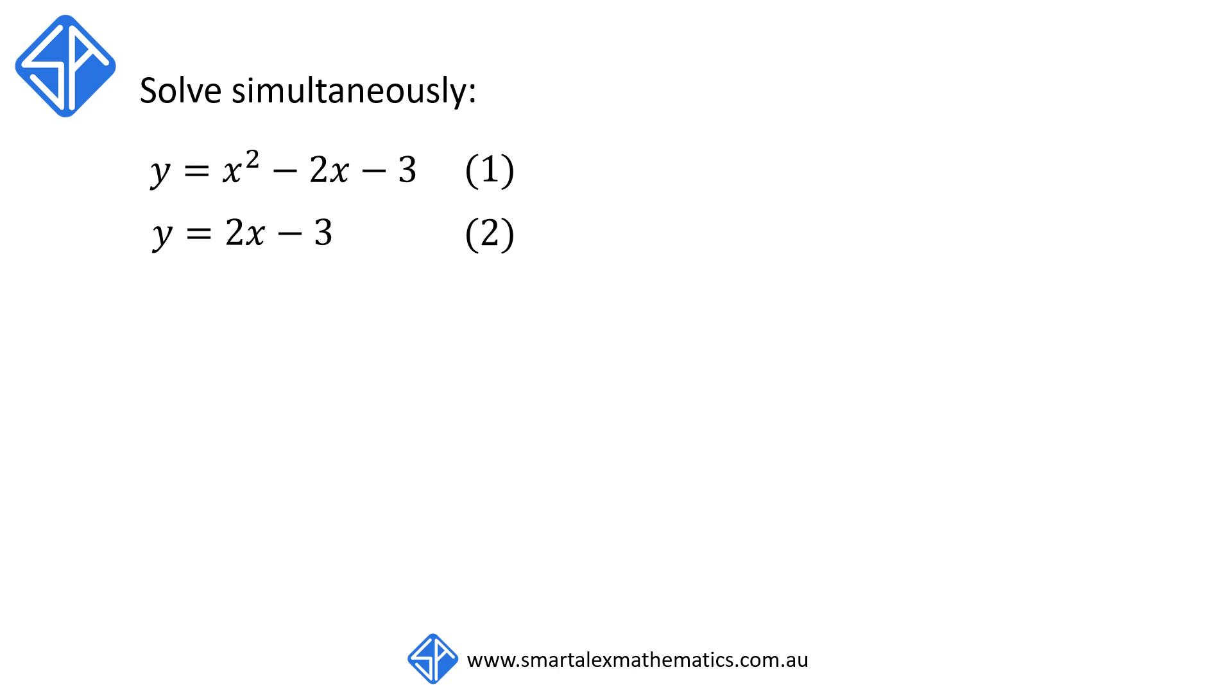Since both of these equations are expressed with y as a subject, in order to solve them, all we need to do is to equate equation 1 and equation 2. This means that we take the right-hand side of both equations and make them equal. So we're going to get x squared minus 2x minus 3 equals 2x minus 3.